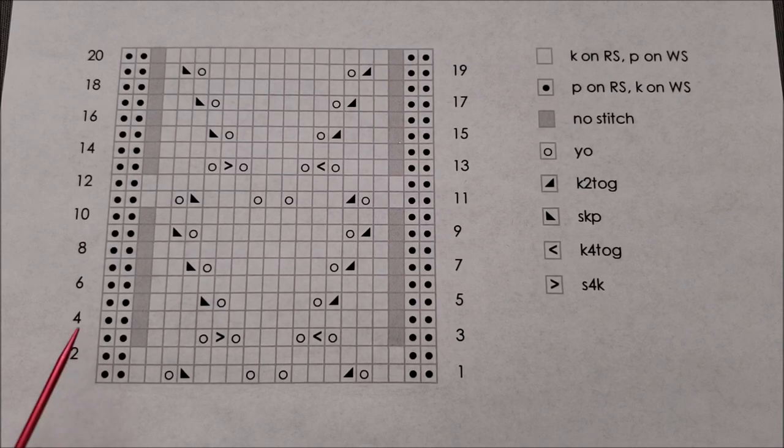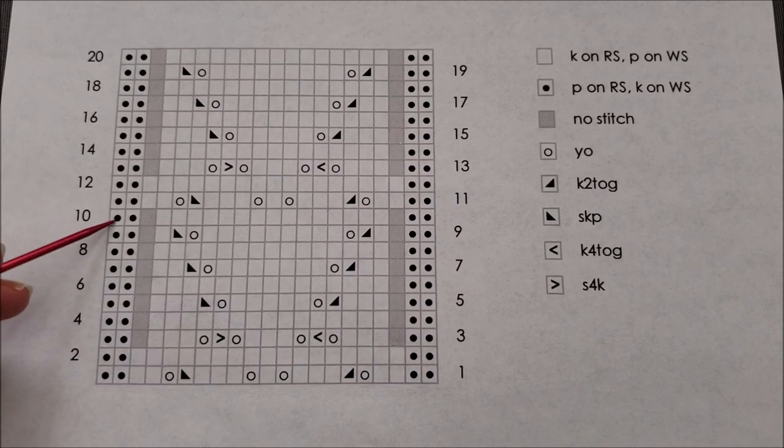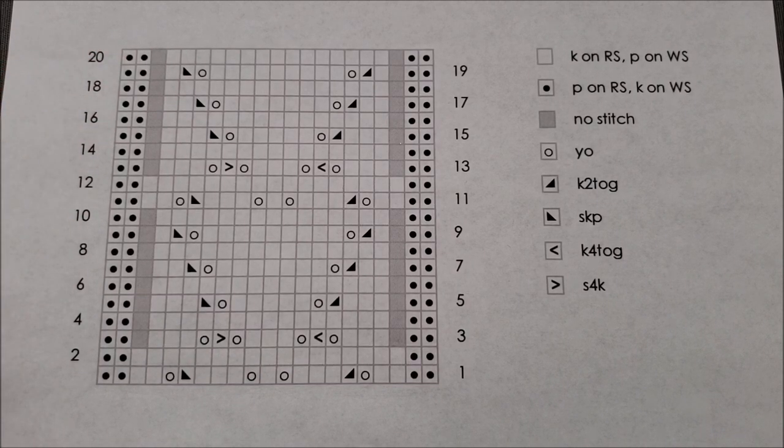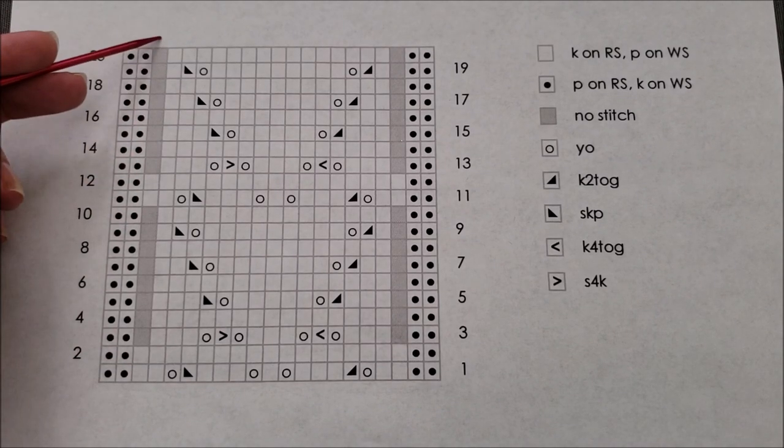Because of the increasing and decreasing in the other rows, rows 3 through 10 and 13 through 20 are all only worked across 19 stitches. These no stitch spaces are basically just placeholders.